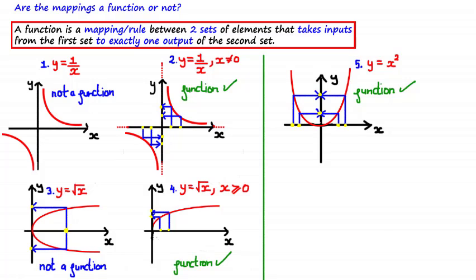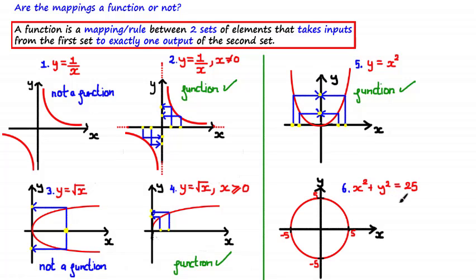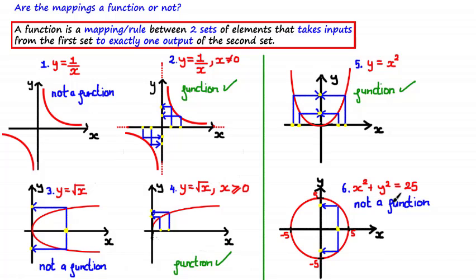The equation x² + y² = 25 represents a circle centered at the origin with a radius of five units. Is this mapping a function? It is not a function because we can find an instance where one input of x maps to two different outputs of y, which doesn't satisfy the definition of a function. As seen in a previous tutorial, any circle or ellipse is classed as a many-to-many mapping, and any many-to-many mapping is not a function.